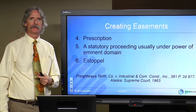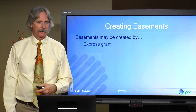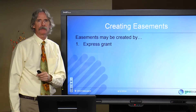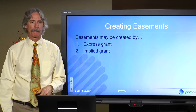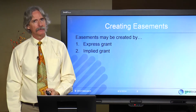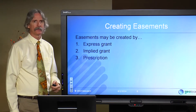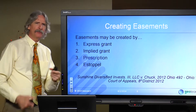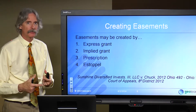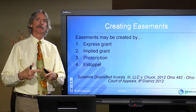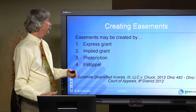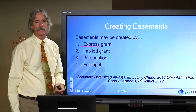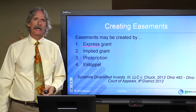Looking at Ohio, easements may be created by express grant, by implied grant, by prescription, or by estoppel. That differs slightly from Alaska, which included condemnation — but ultimately a condemnation results in a written conveyance, so it could be considered a flavor of an express grant.